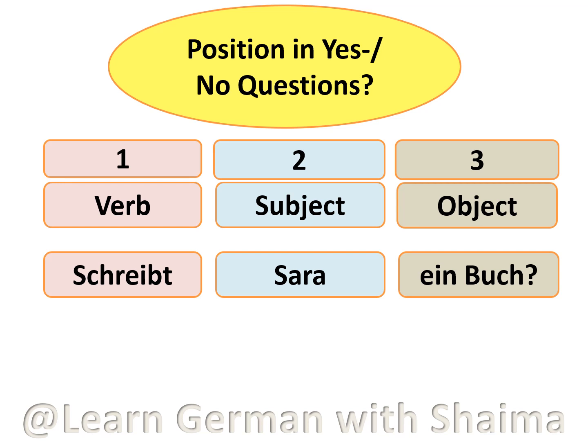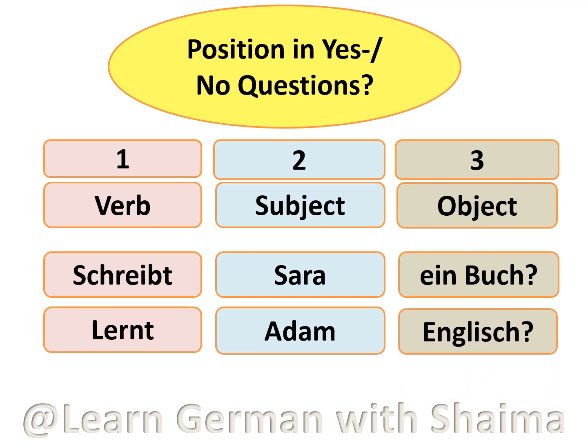The second example: Lernt Adam Englisch? You have the verb lernt in the first position, the subject Adam in the second position, and the object Englisch in the third. The listener answers: Ja, Adam lernt Englisch. Nein, Adam lernt kein Englisch. So once again: verb first, subject second, object third in a yes/no question. This is how the sentence structure in German works for statements, for W-Fragen, and for yes/no Fragen.